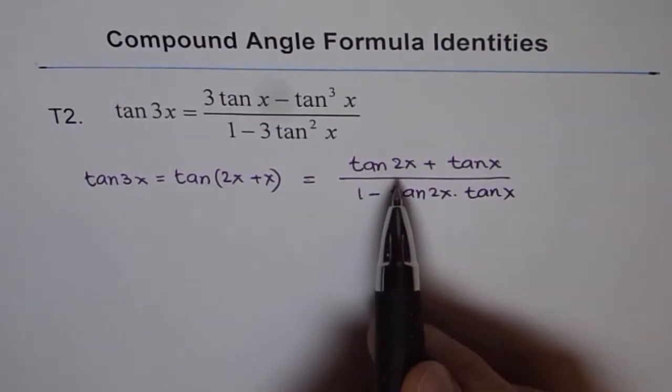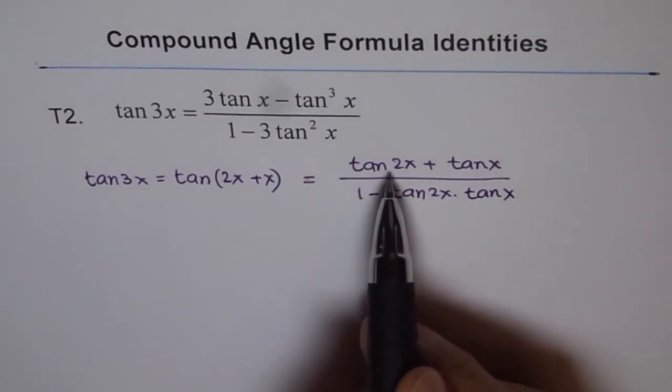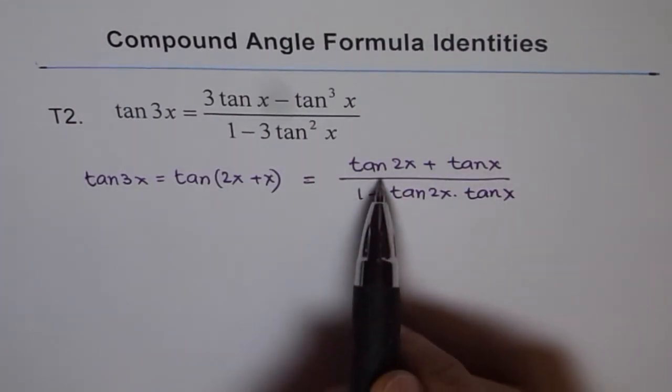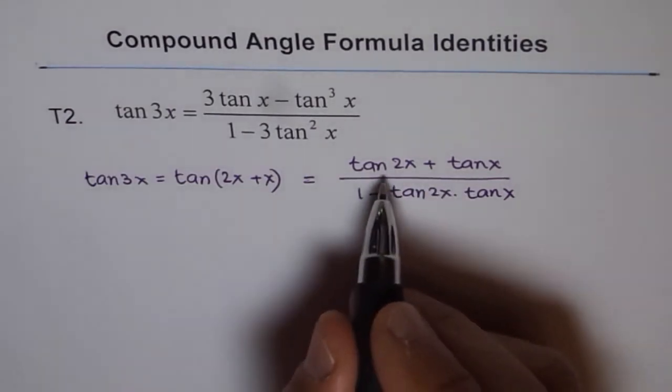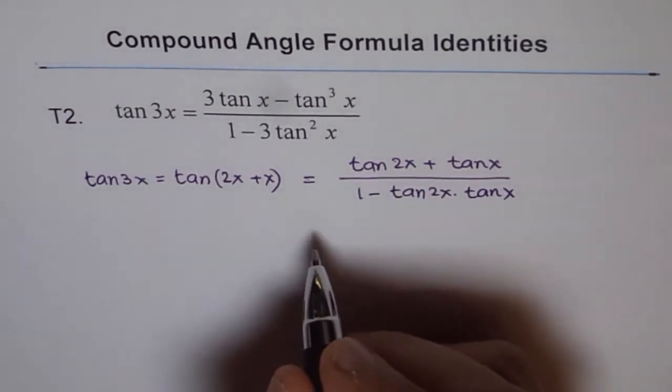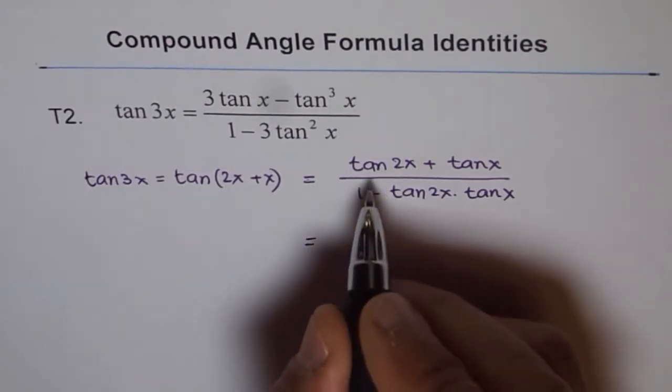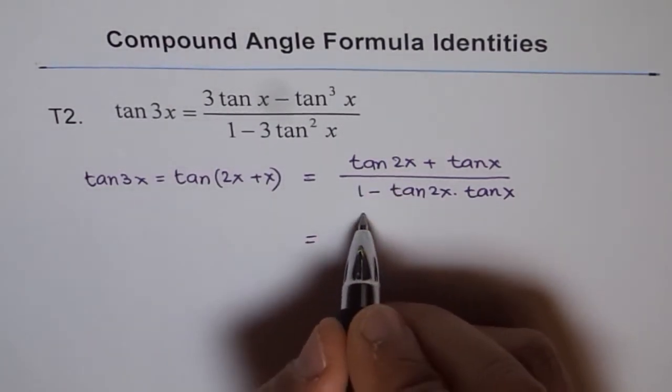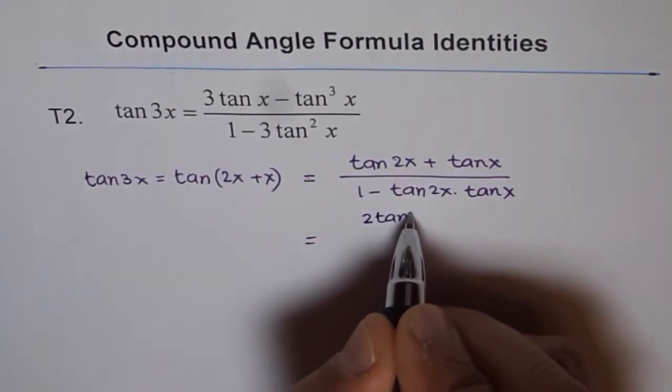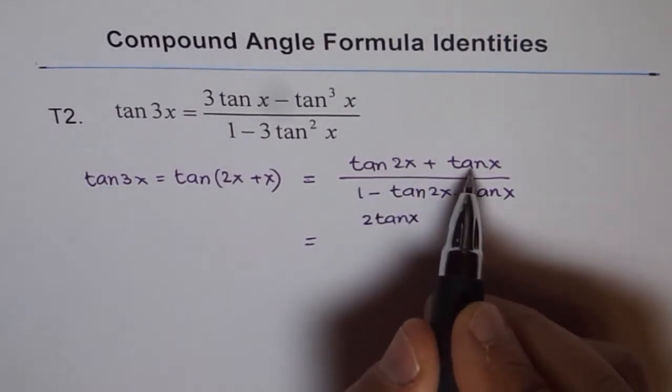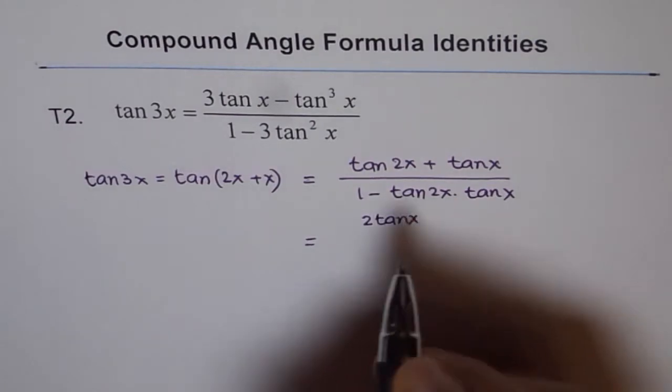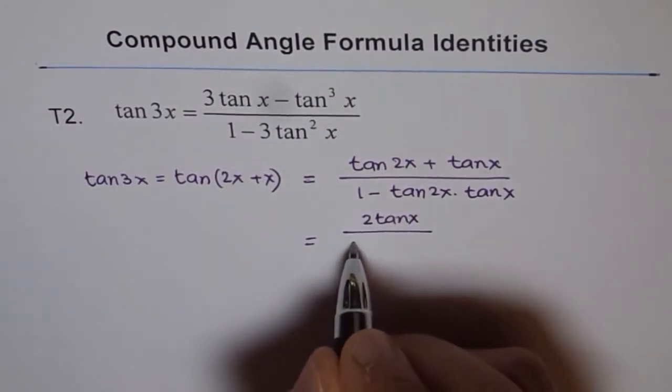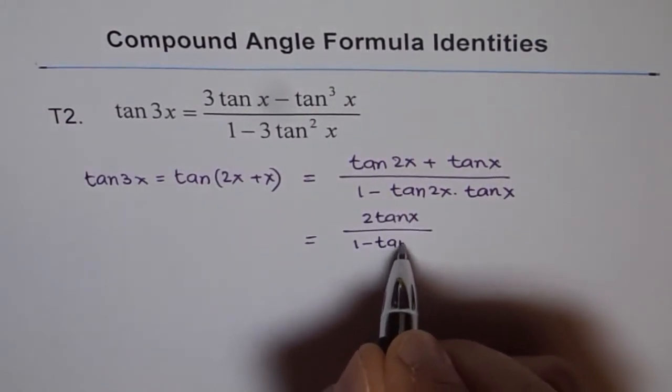Now again we can apply this formula for tan 2x. Tan 2x is tan x plus tan x, which is 2 tan x. So we'll apply it again here and then simplify. Tan 2x can be written as 2 tan x over 1 minus tan squared x.